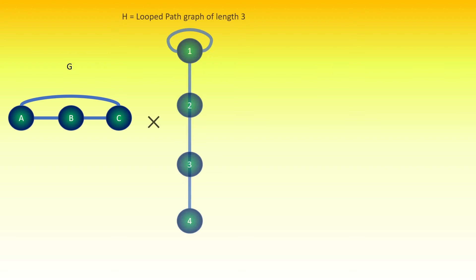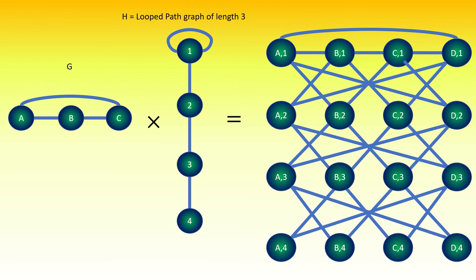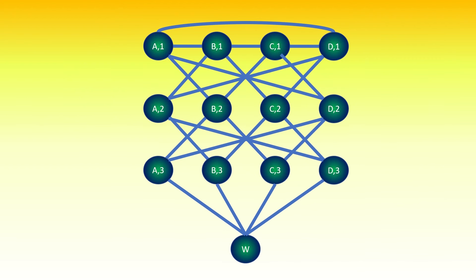Let's try a second example. This is our input graph g and we want to find delta sub 3 of g. First, take the tensor product of g with a looped path graph h of length 3. Next, collapse all of the vertices with right entry equal to the vertex at the non-loop end of h, vertex 4, into vertex w. This is the final graph.